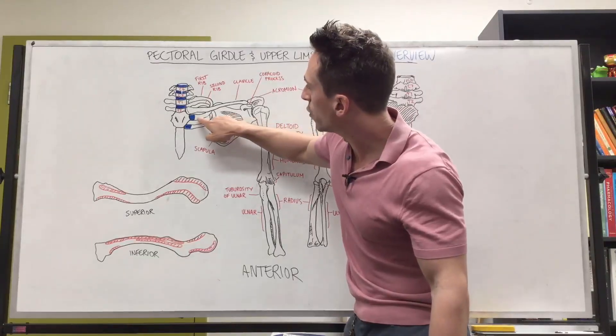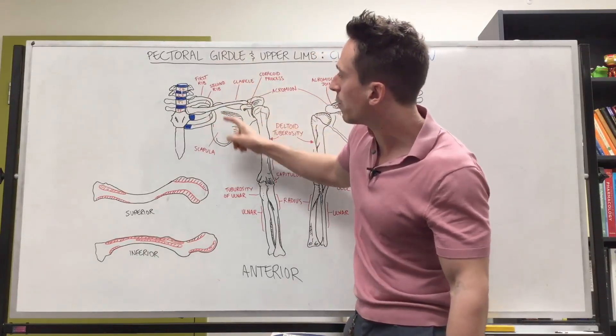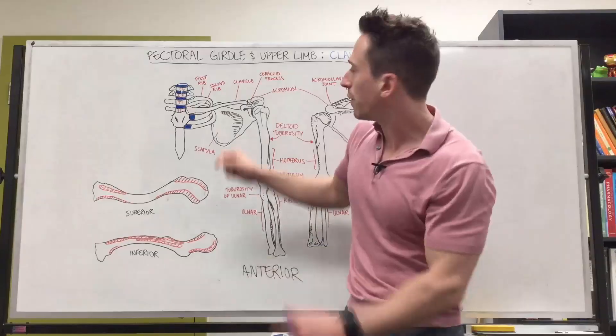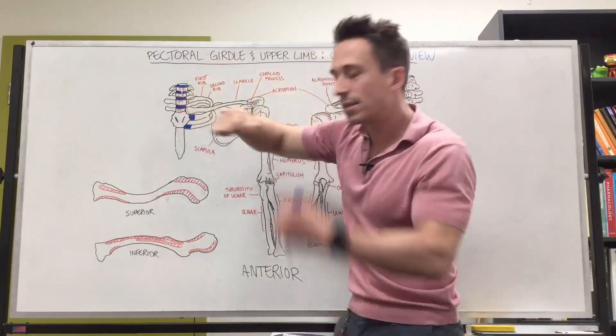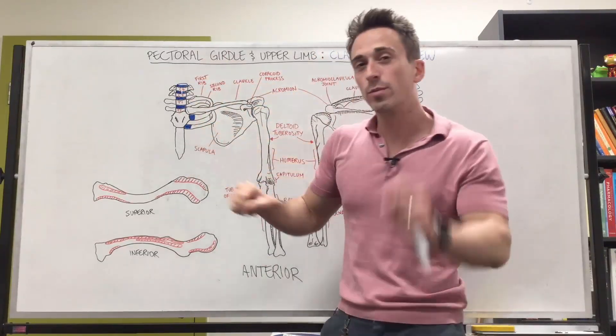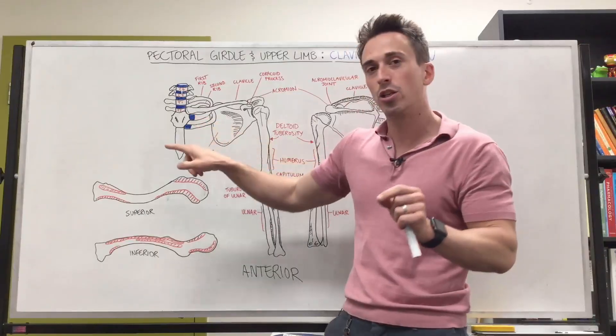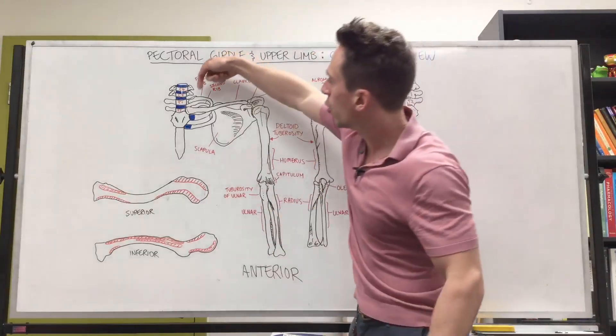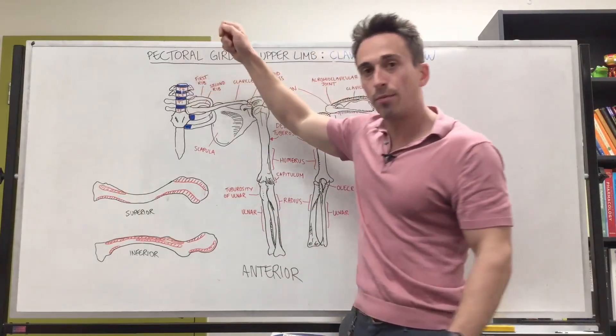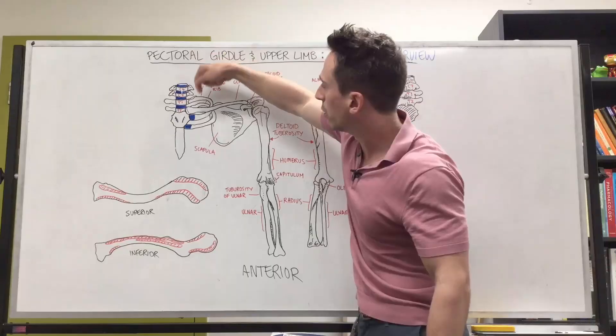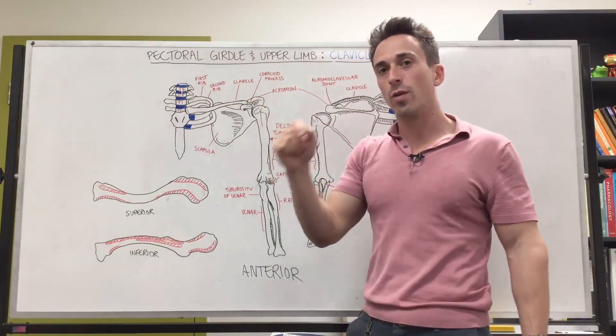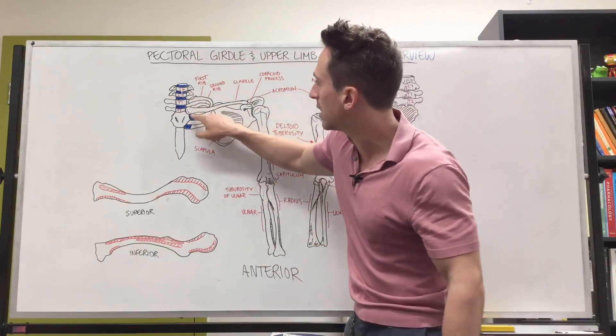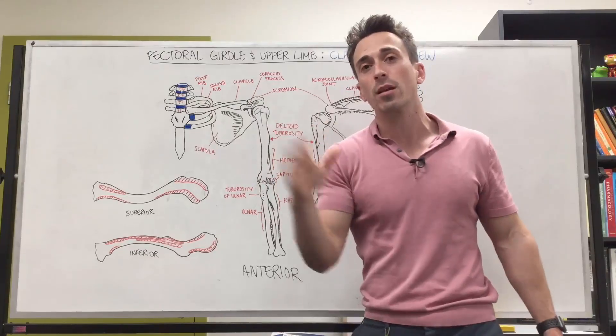You can also see that the first rib sits immediately inferior to the clavicle, and in actual fact, the clavicle has a connection with the first rib, specifically the costal cartilage, which is fibrocartilage of the first rib. So what we have is a connection with the clavicle and the manubrium, and a connection of the clavicle and the costal cartilage of the first rib. And there are actually ligaments that connect these together. I'll talk about the ligaments in a future video.